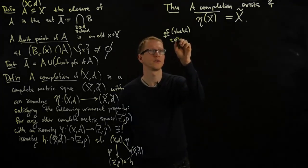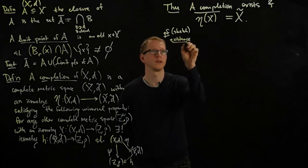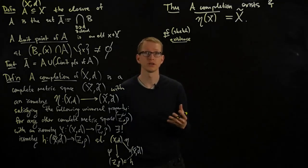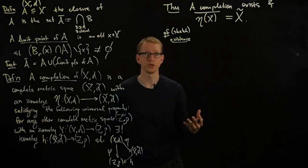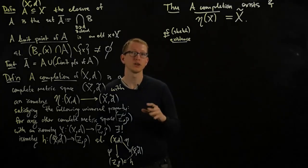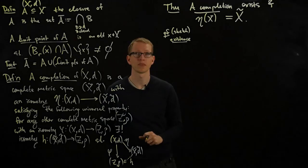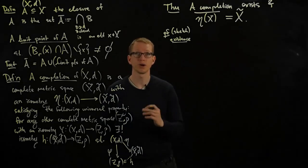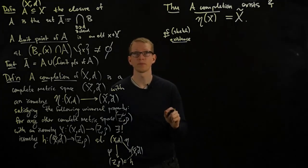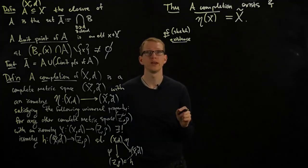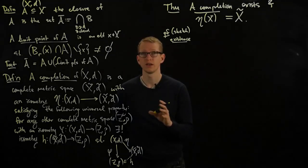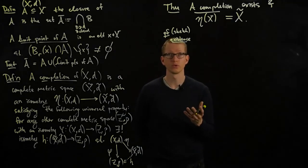So first, we have to show existence. And the way we do that is by actually doing something familiar, something that we've done for rational numbers to real numbers. To construct real numbers from rational numbers, we looked at Cauchy sequences of rational numbers. For instance, square root of 2 can be approximated by its decimal expansion, each of which is a rational number. And we define square root of 2 as a certain equivalence class of Cauchy sequences who converge to square root of 2.